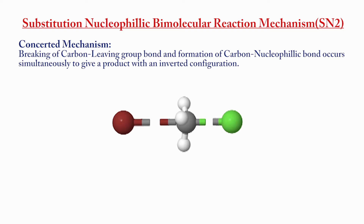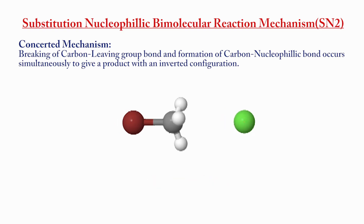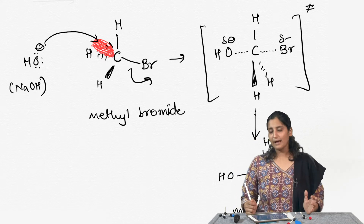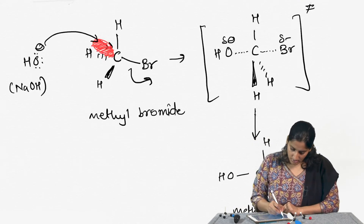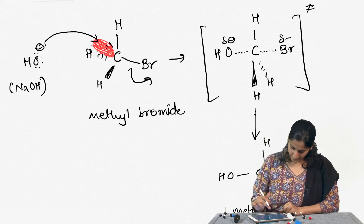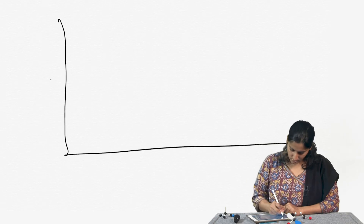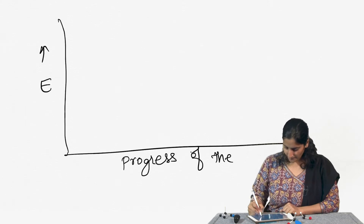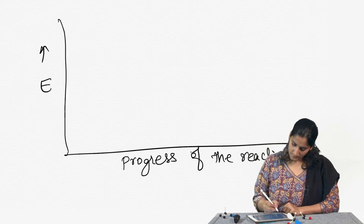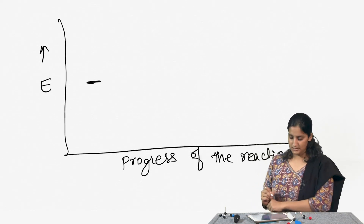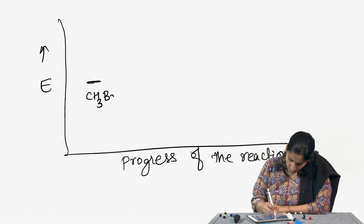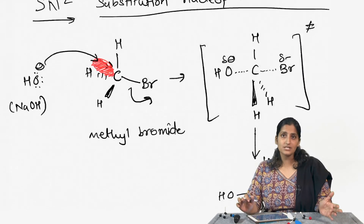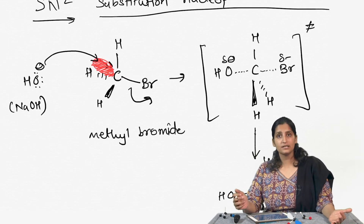We will look at the animation of this reaction. Now let us discuss the energy profile diagram. As the reaction proceeds, we start with the starting material — methyl bromide. Looking at the mechanism, we are not creating any intermediate; it goes through a transition state, but there are no intermediates created in this reaction.